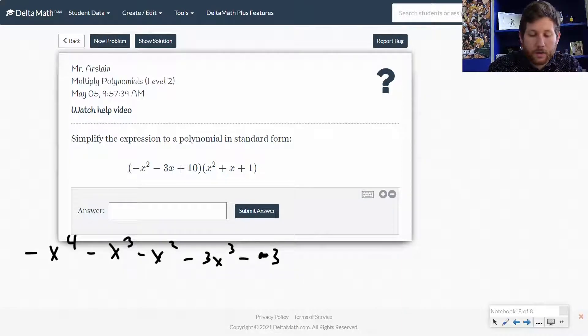All right, negative 3x squared, and then minus 3x. All right, last term, let's use our 10. So I've got plus 10x squared plus 10x plus 10.